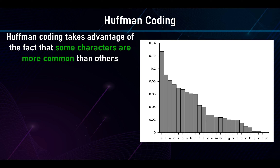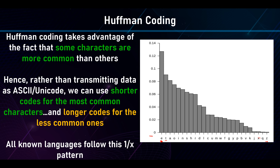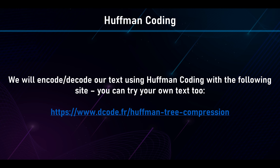Huffman coding has actually been proven as the mathematically optimal compression technique for text. It takes advantage of the fact that some characters are more common than others. In English, 'e' is the most common letter and 'z' is the least common. Rather than transmitting data as ASCII or Unicode, we use shorter codes for the most common characters and longer codes for less common ones. Interestingly, all known languages follow a one-over-x frequency pattern — there's never been a language with equal occurrence of all characters.